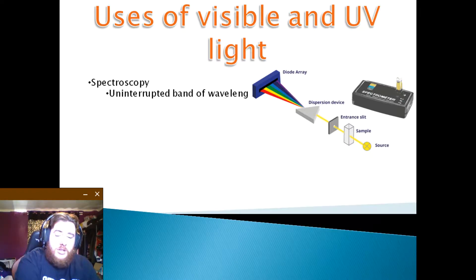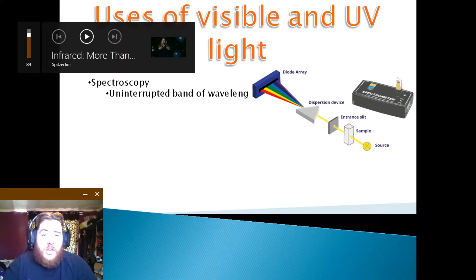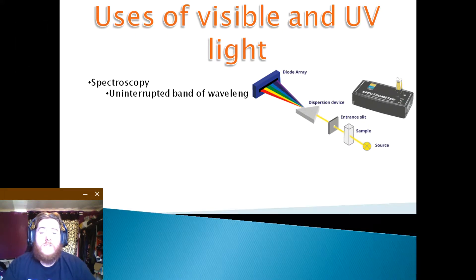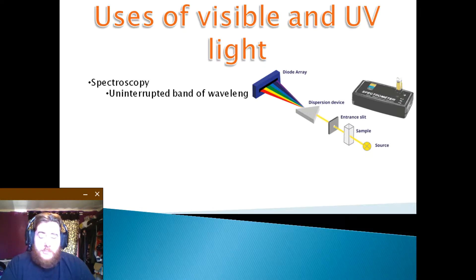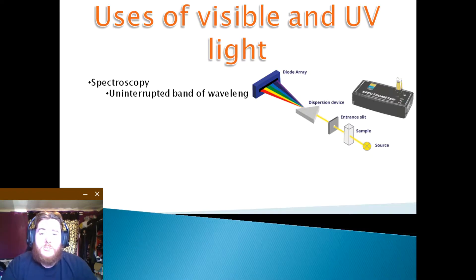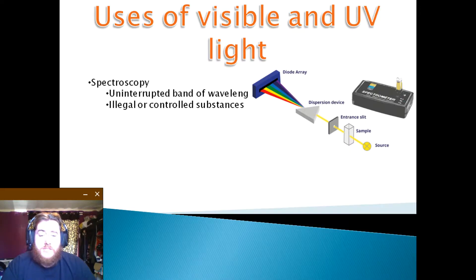If the element is the source of the light, it will emit specific wavelengths. But if the element is between the source and the observer, it acts like a filter and absorbs individual wavelengths. A spectroscope is a simple handheld device consisting of a lens and a prism or diffraction grating to disperse light. In forensics, this is used to detect illegal or controlled substances or residues in unidentified samples.